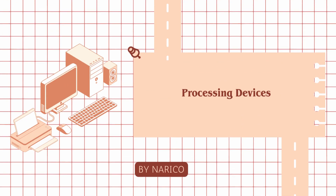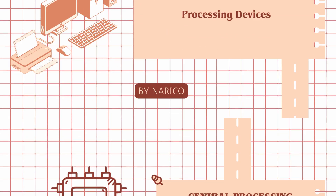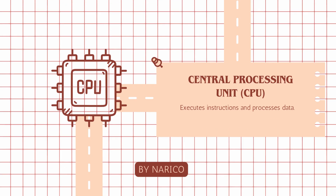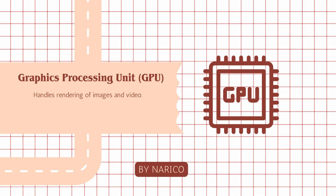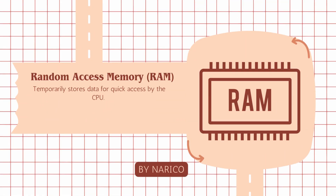Processing devices are responsible for processing data and executing instructions. Central processing unit: the CPU executes instructions and processes data. Graphics processing unit: the GPU handles rendering of images and video. Random access memory, RAM: temporarily stores data for quick access by the CPU.